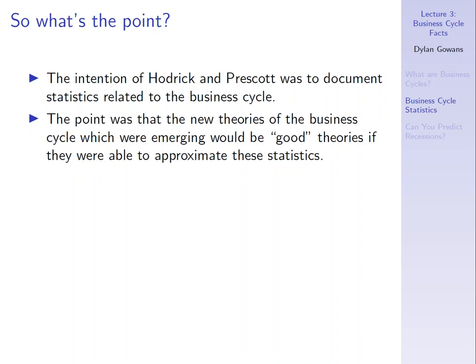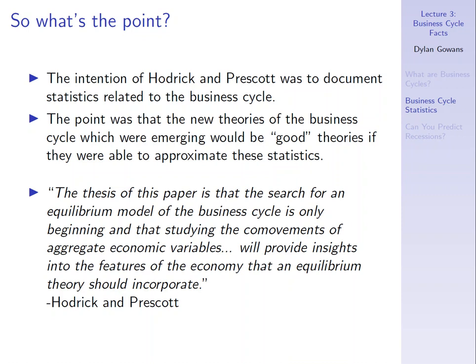Here's a quote from their paper: 'The thesis of this paper is that the search for an equilibrium model of the business cycle is only beginning, and studying the co-movements of aggregate economic variables will provide insights into the features of the economy that an equilibrium theory should incorporate.' It's really a data-finding exercise to improve the equilibrium models new classical economists were building.